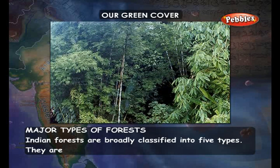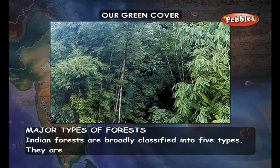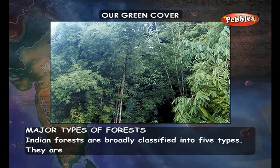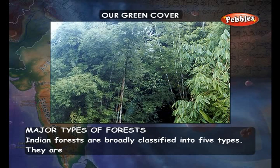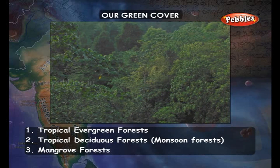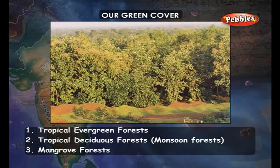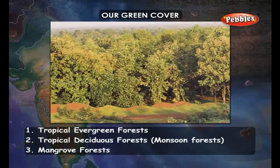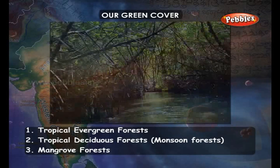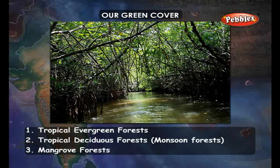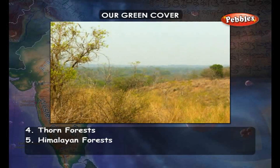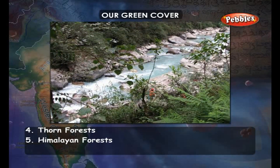Indian forests are broadly classified into five types: Tropical Evergreen forests, Tropical Deciduous forests or Monsoon forests, Mangrove forests, Thorn forests, and Himalayan forests.